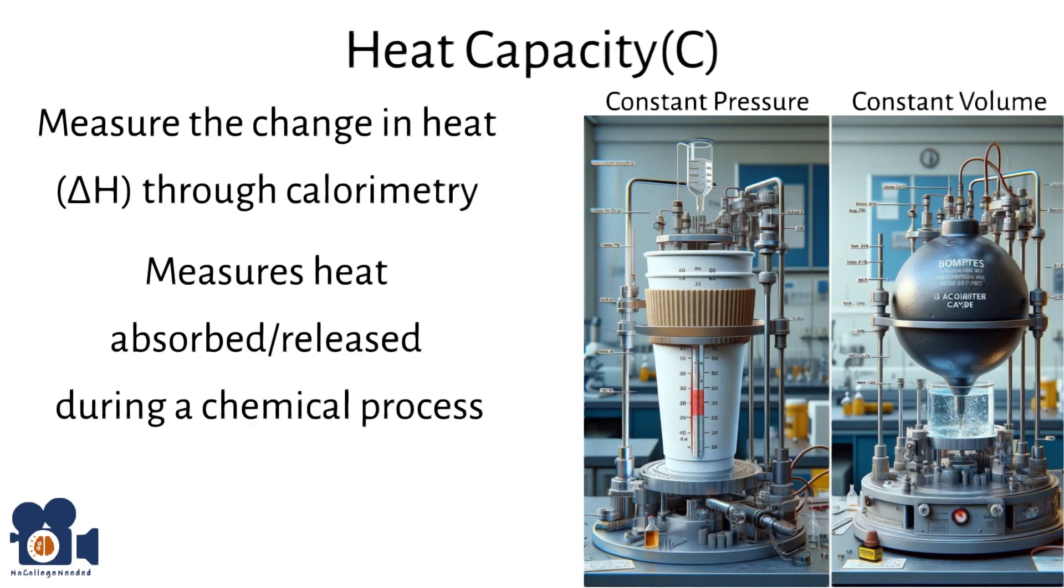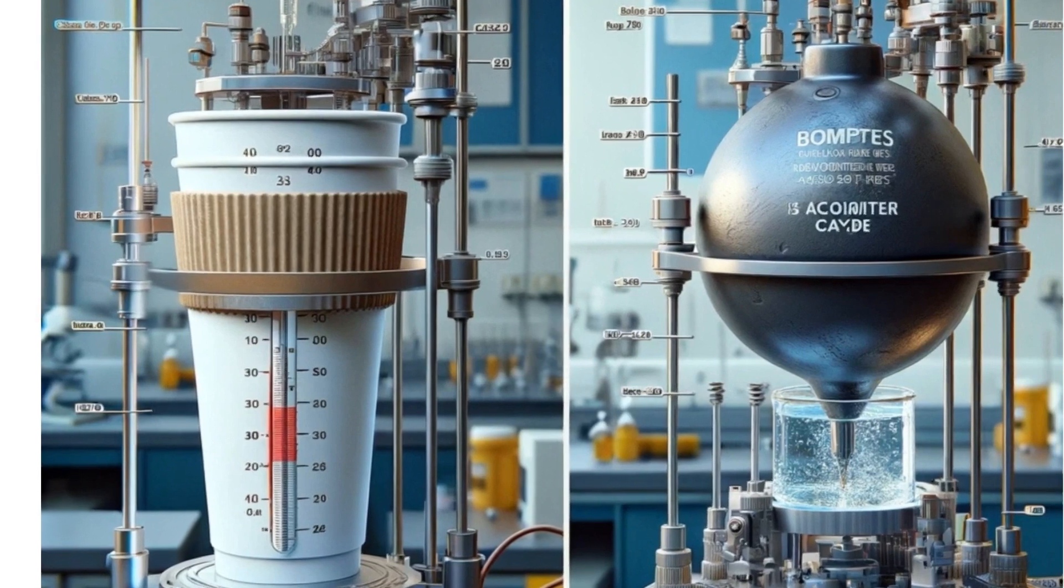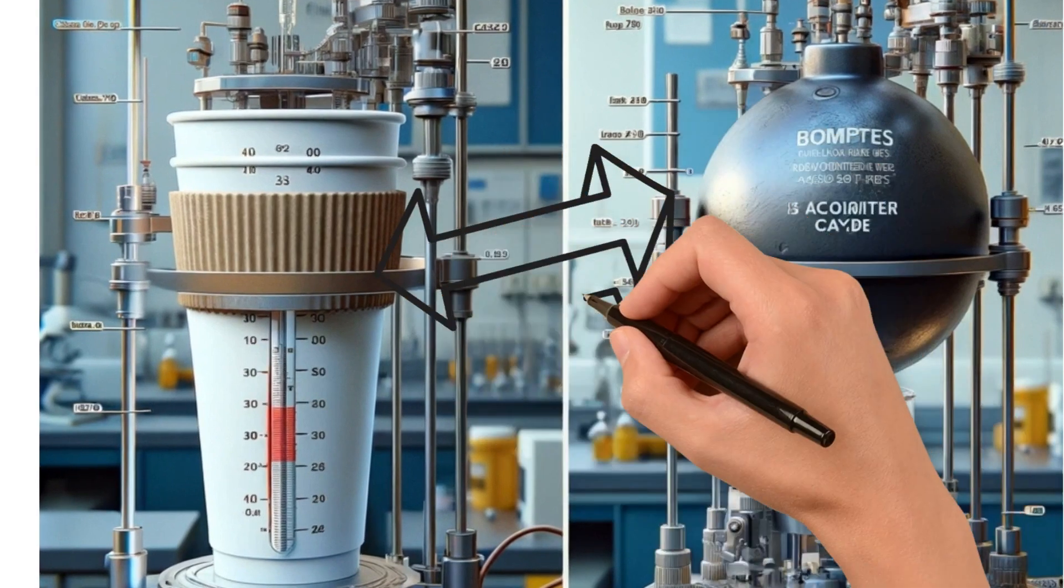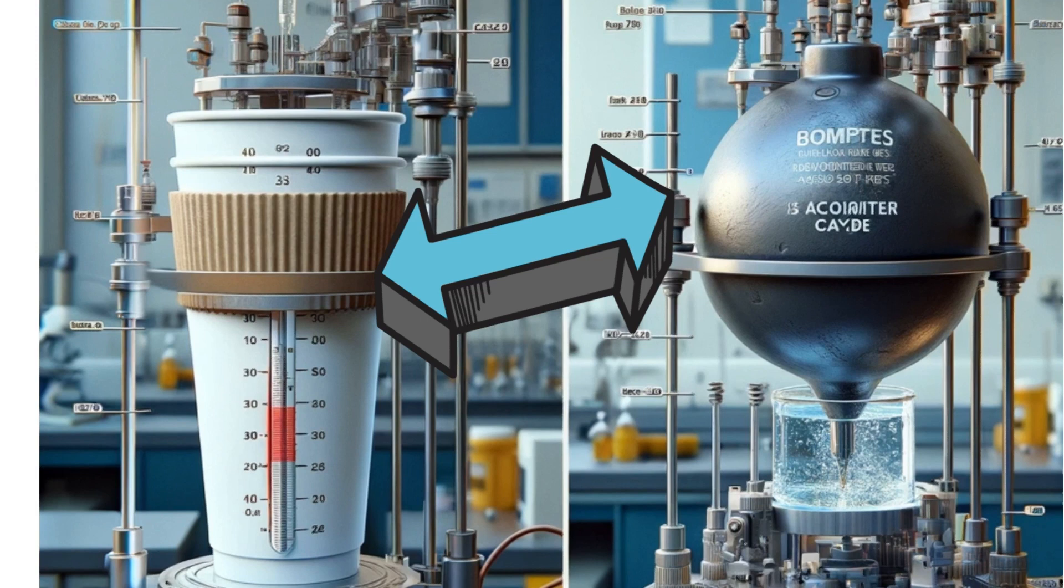Remember delta H equals Q or heat when pressure is constant, and a bomb calorimeter for constant volume calorimetry. In their simplest form, both of these calorimeters consist of a reaction vessel inside a water bath. The vessel contains the reactants and the water bath helps measure the temperature changes. When the reaction occurs, the change in temperature of the water is used to calculate the heat transferred via a thermometer.